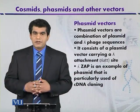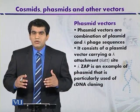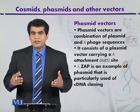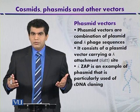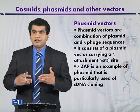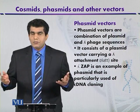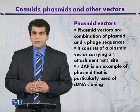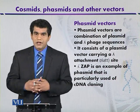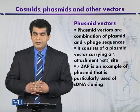Phasmid vectors. Phasmids are a combination of plasmid DNA plus the lambda genome, where the lambda genome includes the attachment site. Such a combination of plasmid DNA including the lambda attachment site is called a phasmid vector.